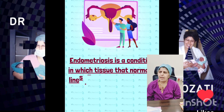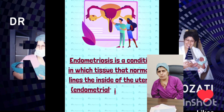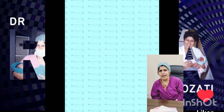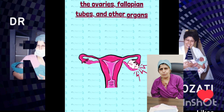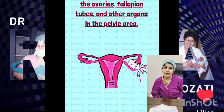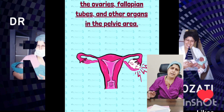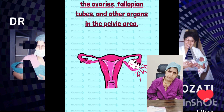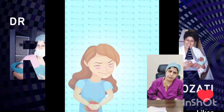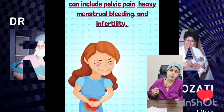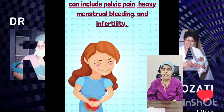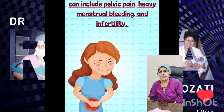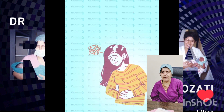Ma'am, what is endometriosis? Endometriosis is a pathology in women which is characterized by implantation of the inner lining of the uterus — which is the endometrium — outside the uterine cavity. Either it gets implanted in the pelvic tissue, the pelvic peritoneum, or in the ovaries where it becomes a chocolate cyst, or it will penetrate inside the myometrium and become adenomyosis. This is endometriosis.